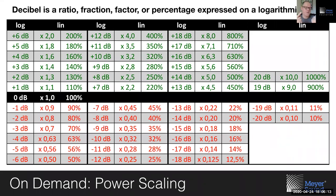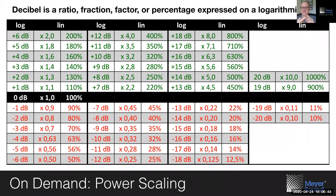A decibel is nothing else but a ratio, fraction, factor, or percentage — which are four ways of saying the same thing — expressed on a logarithmic scale. It's two sides of the same coin. One side of the coin is the linear scale, like a ruler, which everybody feels comfortable with, and the other side is decibels. Decibels is the unit we deal with when talking about loudness and level, so we better get used to it. It's a simple ratio between two quantities.